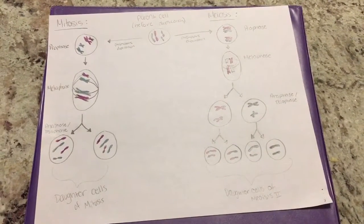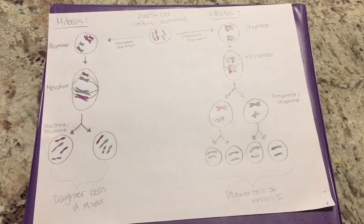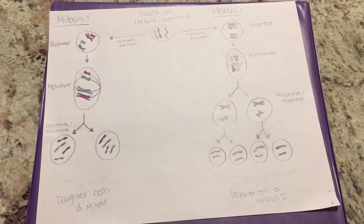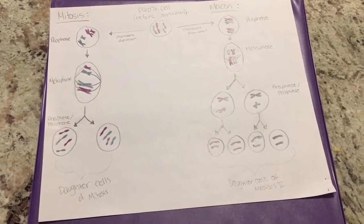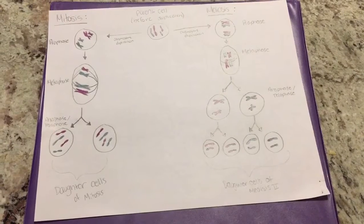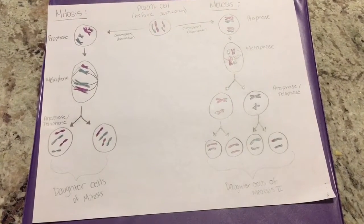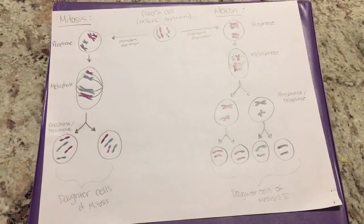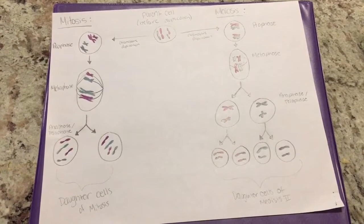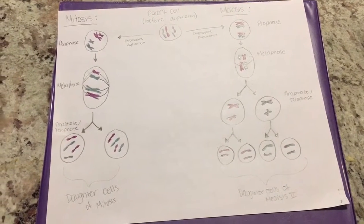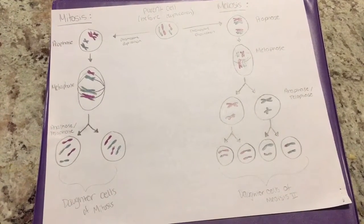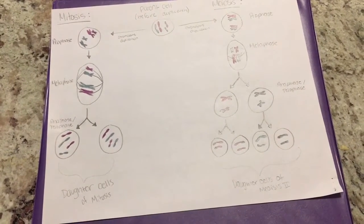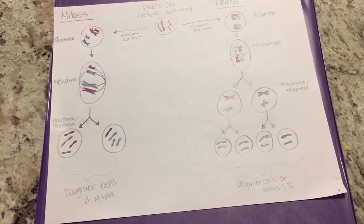Mitosis has four main phases: prophase, metaphase, anaphase, and telophase. During prophase, the cell's nuclear membrane or envelope begins to break down. The cell's chromatin also starts to condense to form chromosomes that are held together by a central centromere. The centromeres will move away from the nucleus and form a spindle.